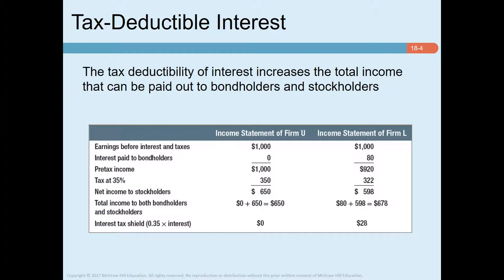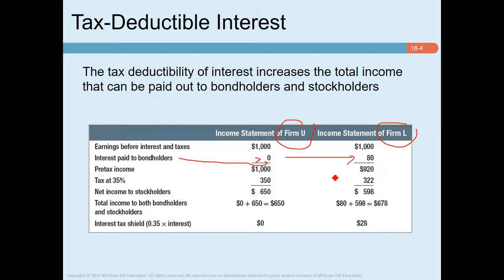Regarding corporate taxes: debt financing has one important advantage under the corporate income tax system. In the United States and many other countries, the interest a company pays is a tax-deductible expense — the return to bondholders escapes taxation at the corporate level. Consider this example: Firm U has no debt, so interest paid to bondholders is zero. Firm L has eight percent interest and pays 80 dollars to bondholders.